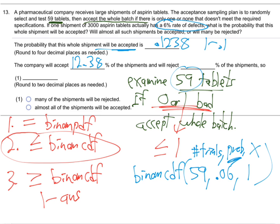To get the reject percentage, subtract from one — one minus 0.1238 gives you 0.8762, so 87.62 percent of the shipments will be rejected. So they're only accepting a small percentage — many of the shipments will be rejected.